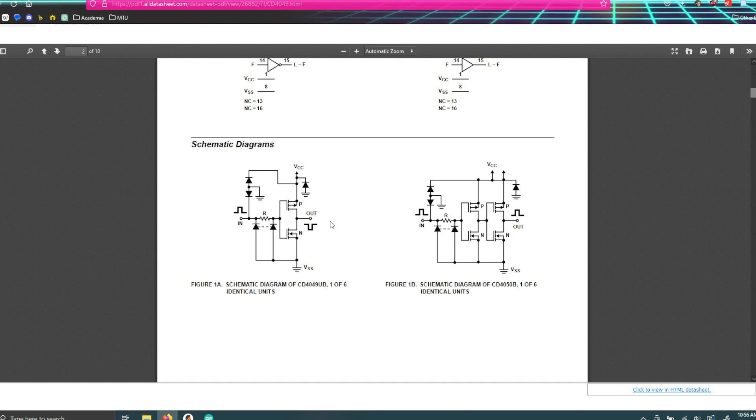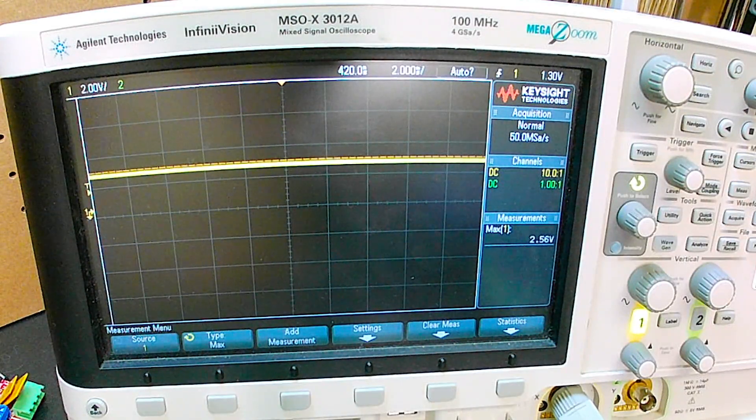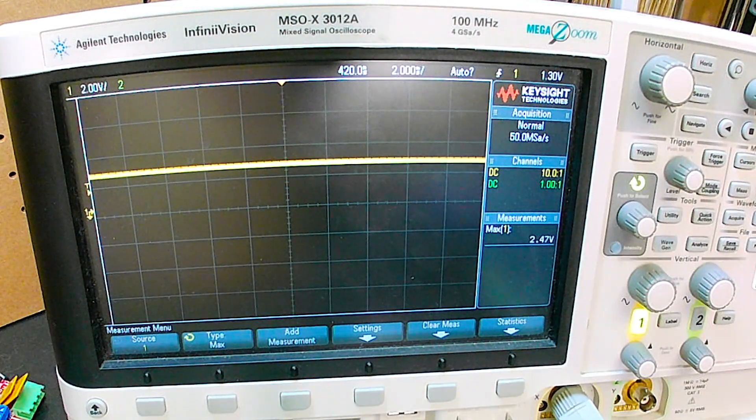So the question becomes, can we see that oscillation? Can we see that bounce back and forth or how quickly does it happen? And note that these diodes do work to dampen that oscillation a little bit. So let's see what we can see if we go over to our oscilloscope.